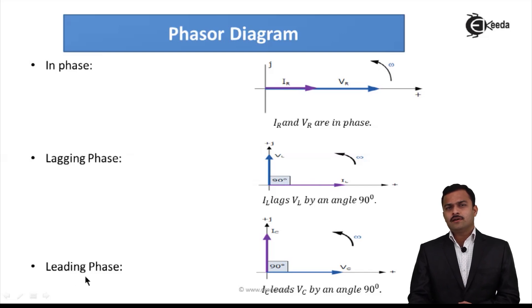Same way for a leading phase, I can say this is a voltage and this is a current. So in this way, I can say here voltage is behind current. So I can say voltage lags current by 90 degree or suppose I want to say in terms of current, current leads voltage by 90 degree. Same is the case for this also. Either I can say current lags voltage by 90 degree or voltage leads current by 90 degree.